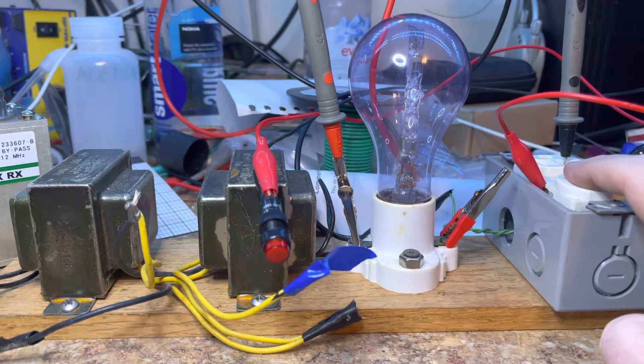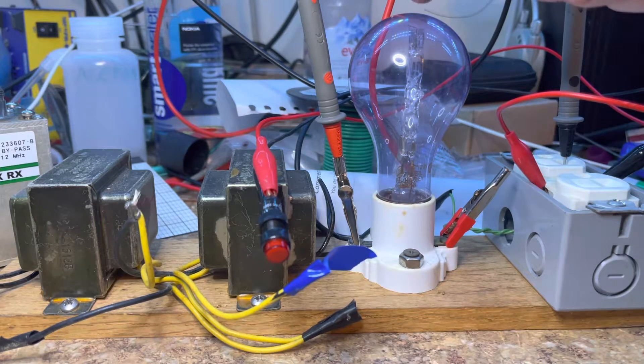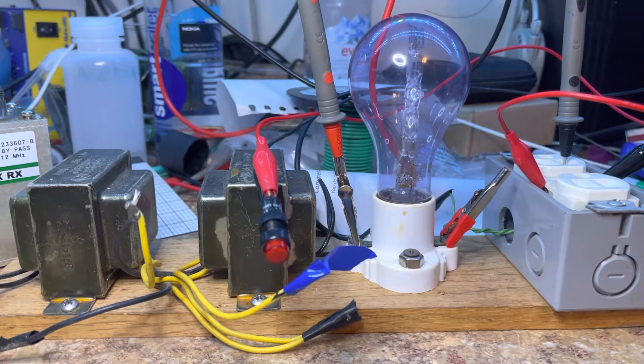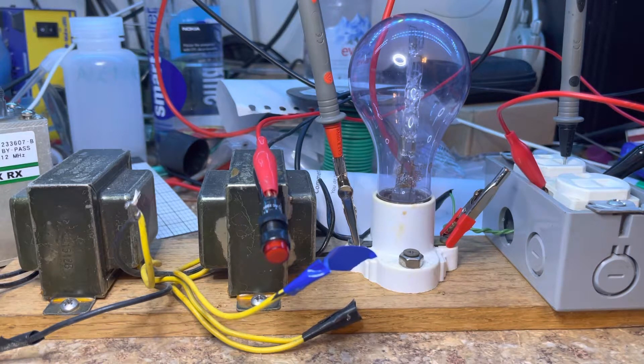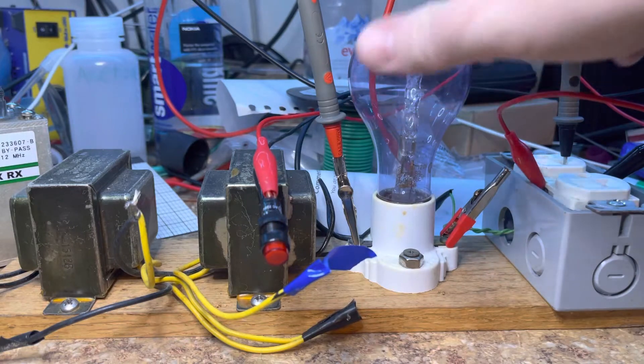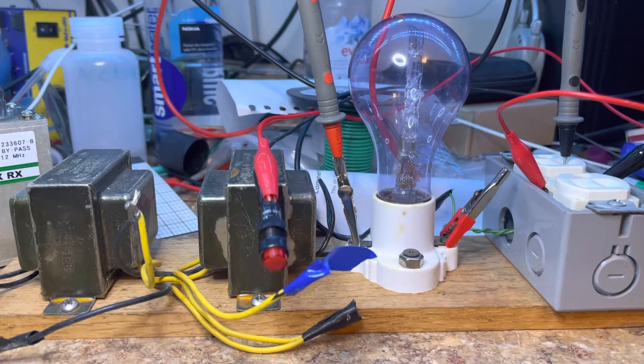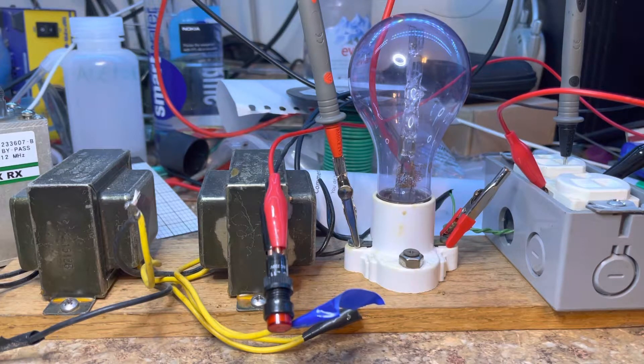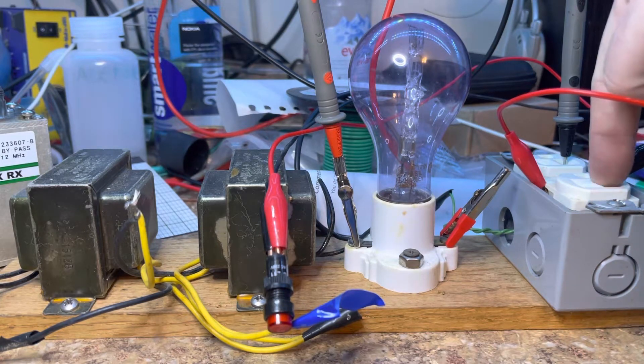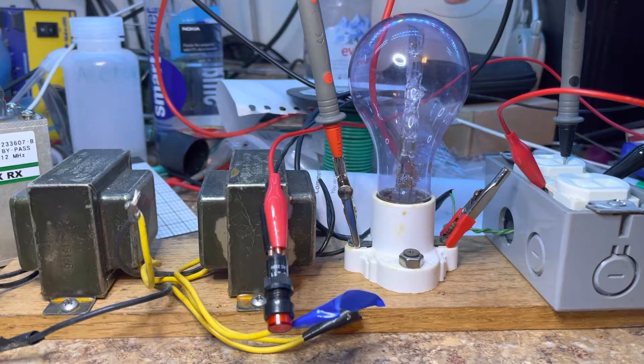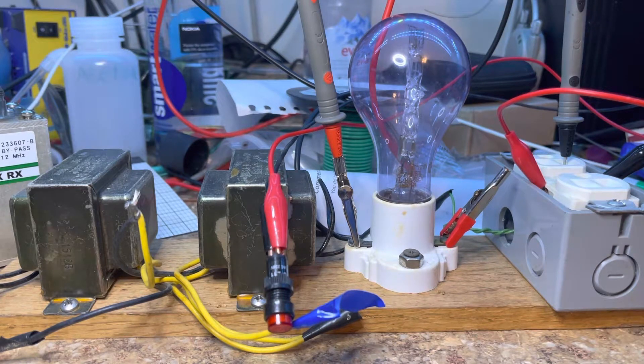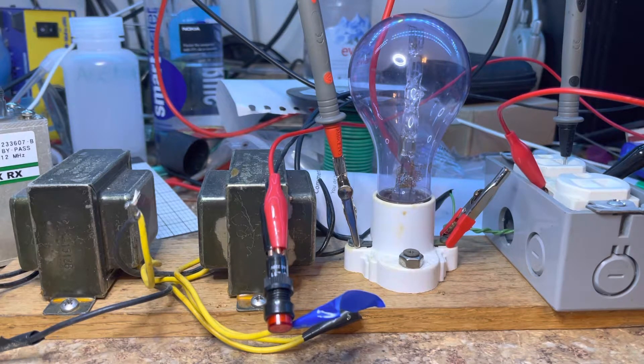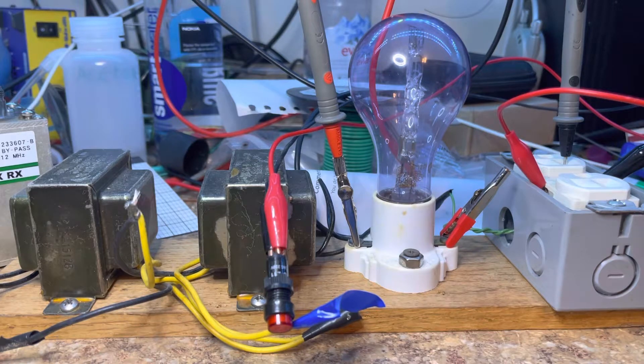So typically I'd plug something into this outlet and if it was a direct short or something like that, this would essentially become a load in line with it. Otherwise it's not dissipating much heat, it's basically acting like a short circuit at that point. But if there is a direct short circuit over here, this will light up.